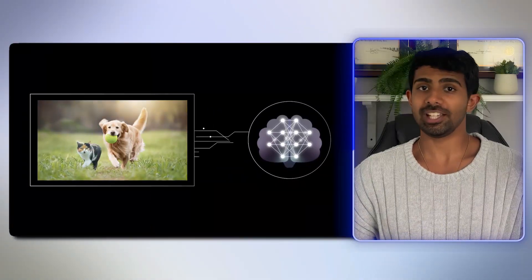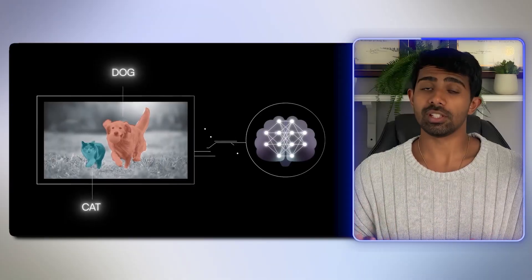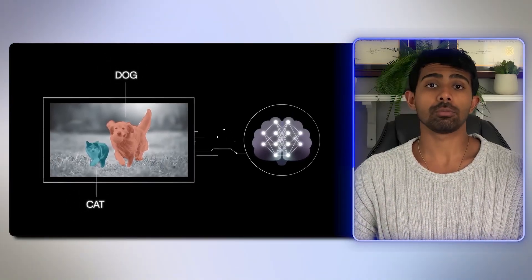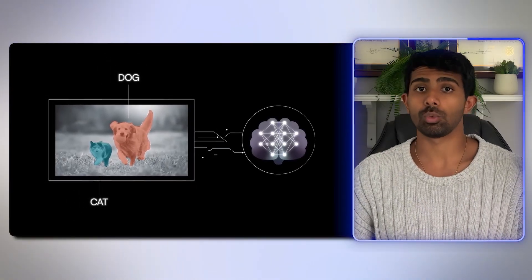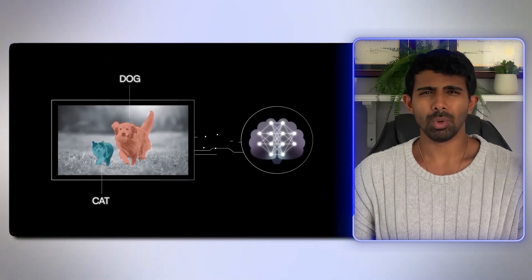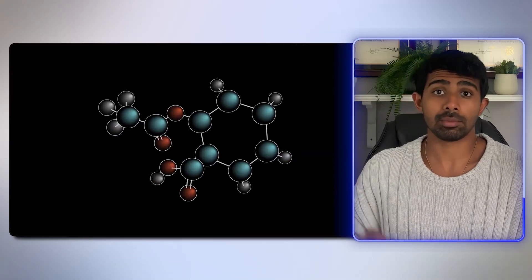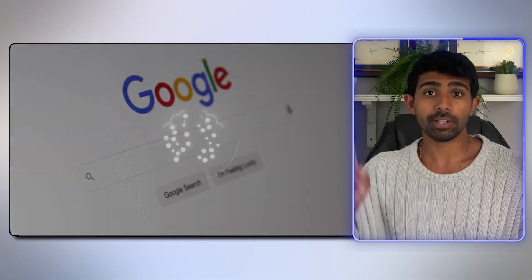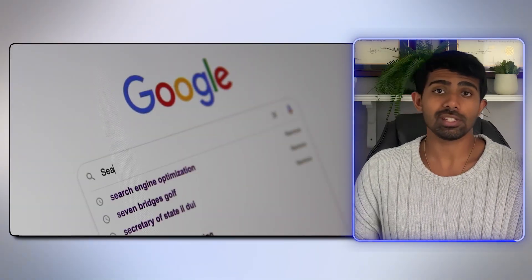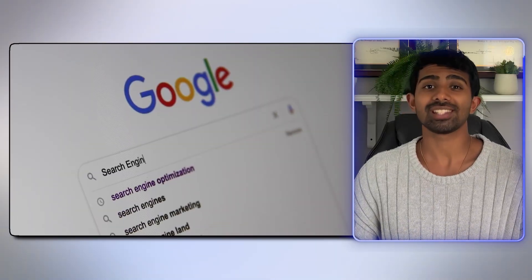What even is a GNN? Imagine you're working with images — an image detection model works pixel by pixel. For text, an LLM works word by word. But what if your data isn't a grid or a sequence? What if it's something completely different, like a network? Maybe a social network where friends are connected to friends, maybe a molecule where atoms are connected by chemical bonds, or even a recommendation system where users are connected to suggested products. That's where GNNs come in.